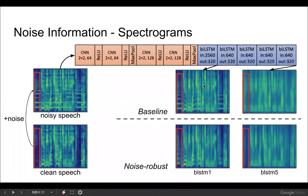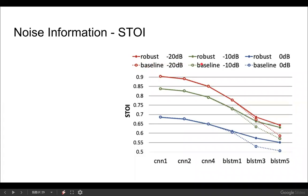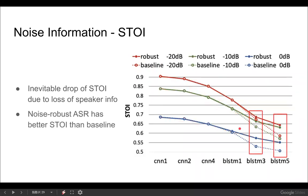To further verify that our probing model faithfully conveys the difference in denoising capability between baseline and noise-robust ASR, we adopted the STOI measure, which stands for Short-Time Objective Intelligibility. The lower the STOI, the more the distortion. We measured STOI between clean speech and the recovered audio, and compare the difference between baseline and noise-robust systems. Red, green, and blue correspond to equal SNR, minus 20 dB, minus 10 dB, and 0 dB. While we observe an inevitable drop of STOI in both baseline and robust ASR — attributable to loss of speaker information — the noise-robust ASR (solid lines) suffers less from input degradation and achieves better STOI scores compared to the baseline (dotted lines).